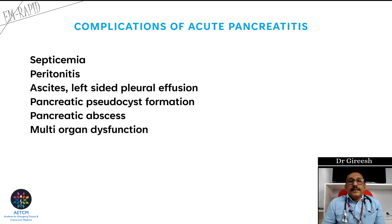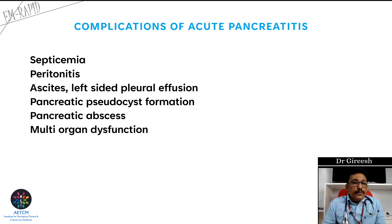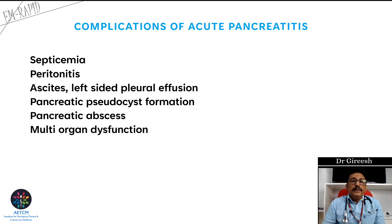Some patients develop complications such as septicemia, which definitely requires antibiotics. Most peritonitis in pancreatitis is chemical peritonitis, but antibiotics like imipenem may still be required. Patients can also develop ascites, left-sided pleural effusion, pseudocyst formation, pancreatic abscess, and multi-organ dysfunction syndrome.